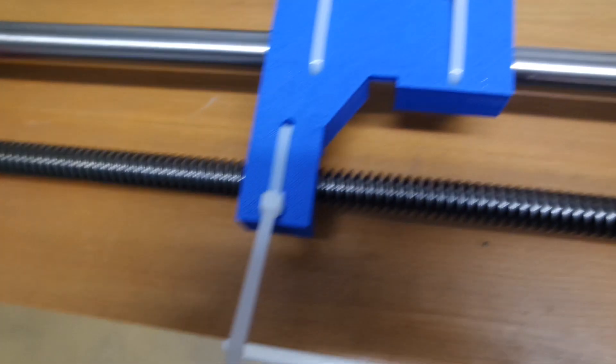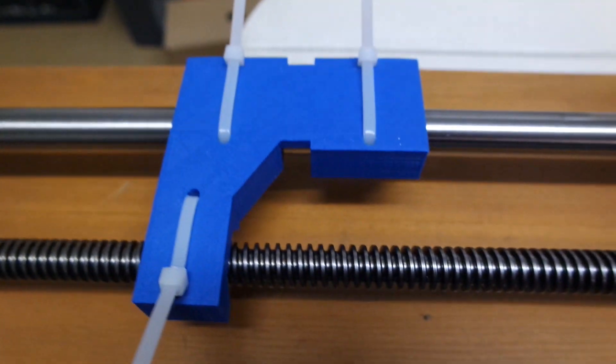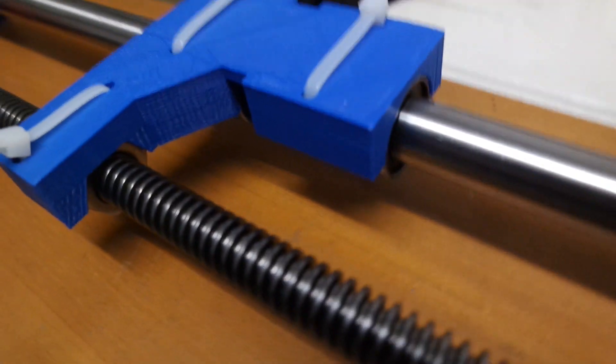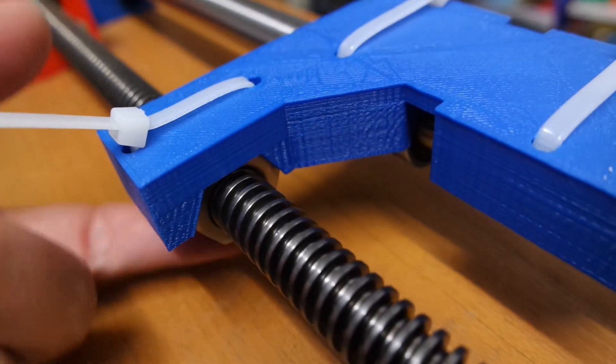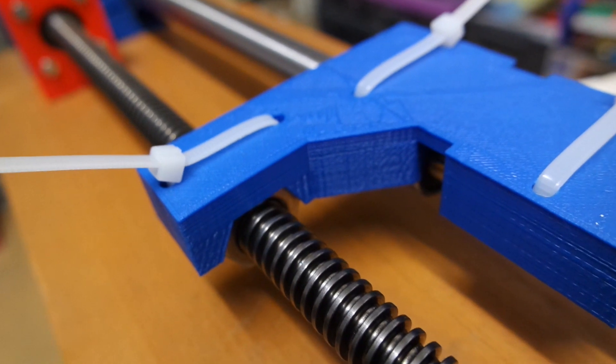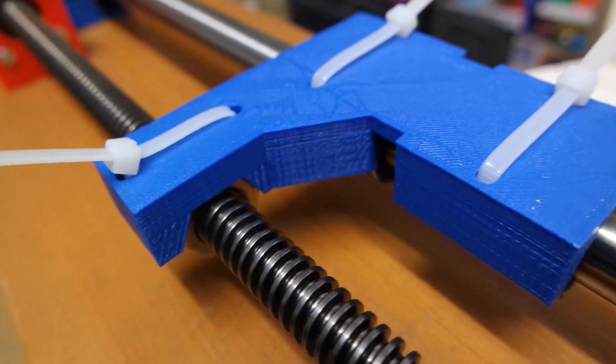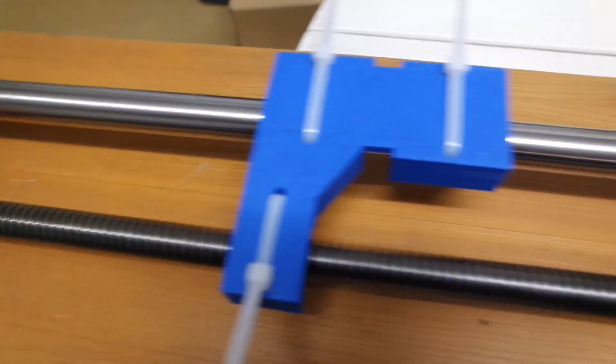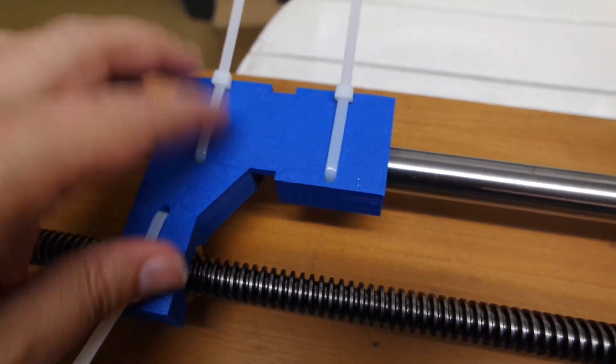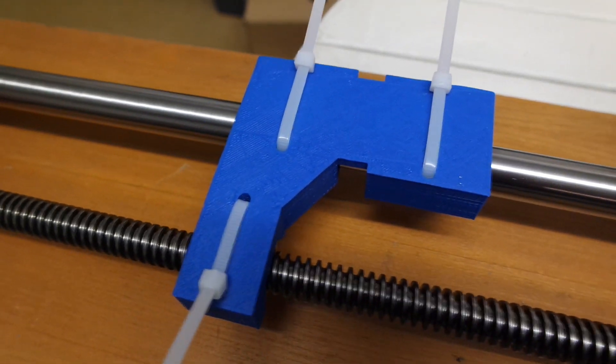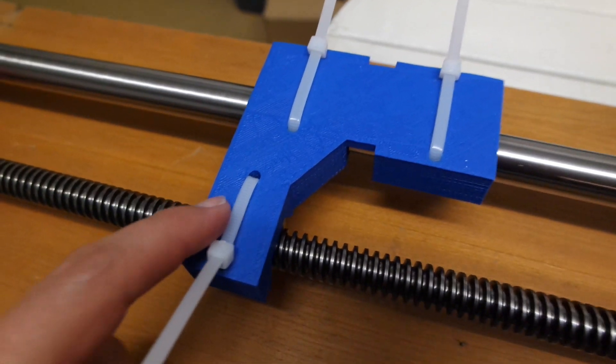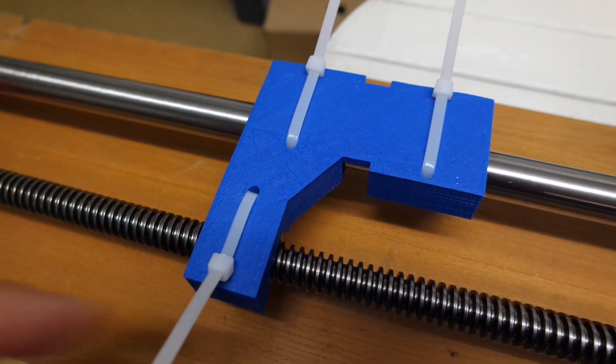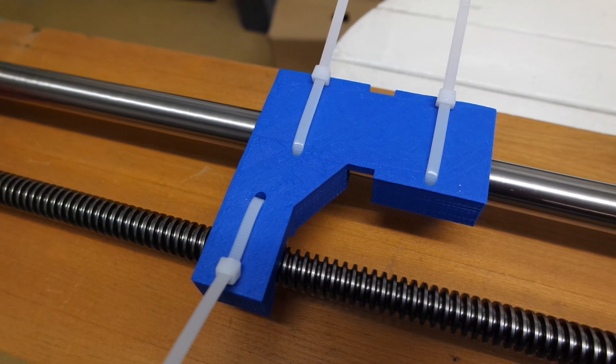I went ahead and made this part which fits over the linear bearings and the nut for the threaded rod. And as you can see, I got it wrong, of course. This part here should be the other way around, but it's not too bad because this part also has a number of errors, so I'm going to print it again.